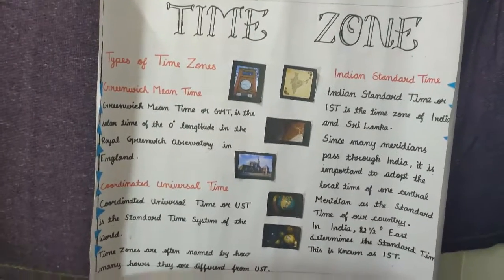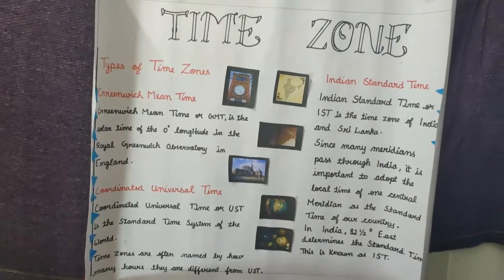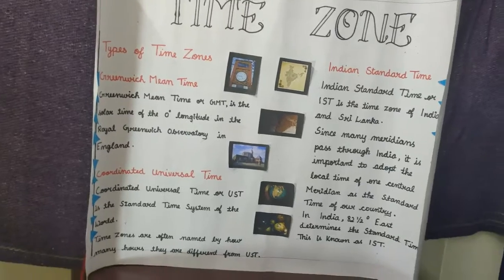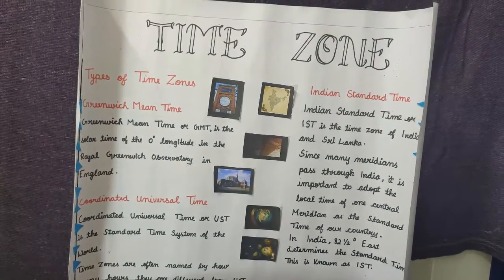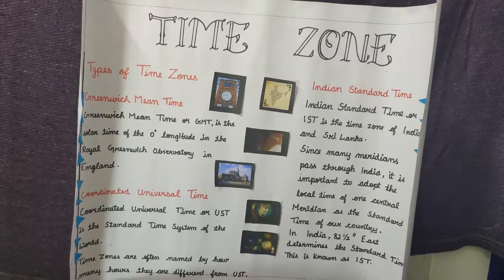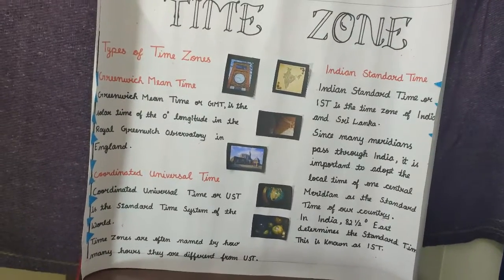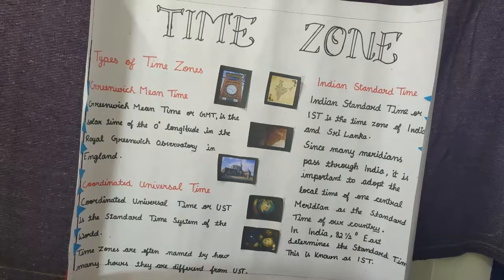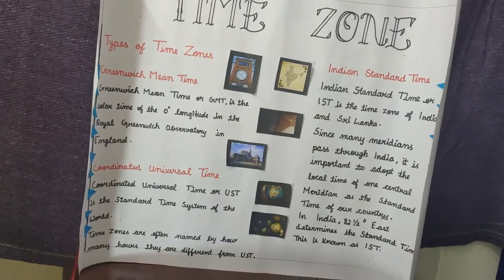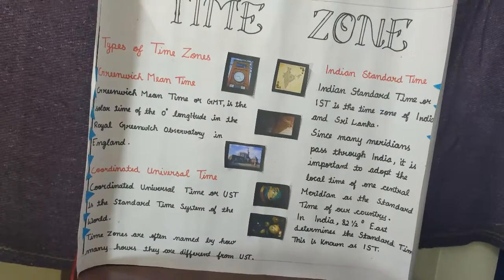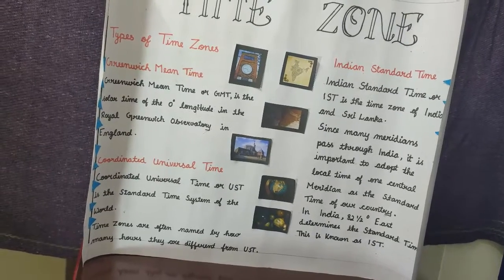So let us move to the types of time zones. Greenwich Mean Time, or GMT, is the standard time of zero degree longitude, observed at the Royal Greenwich Observatory in England. Coordinated Universal Time, or UTC, is the standard time system of the world. Time zones are often named by how many hours they differ from UTC.